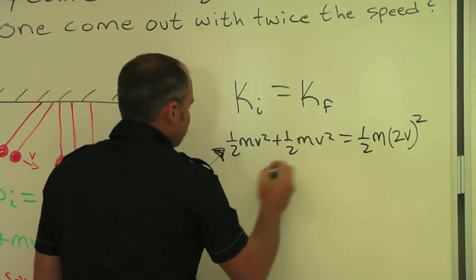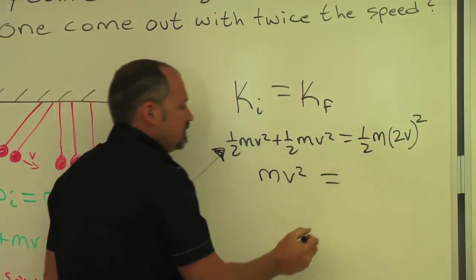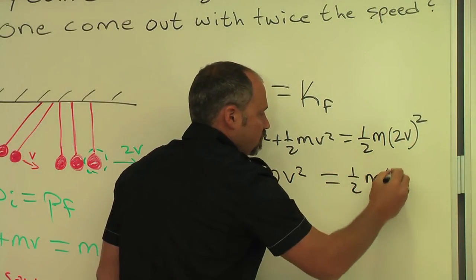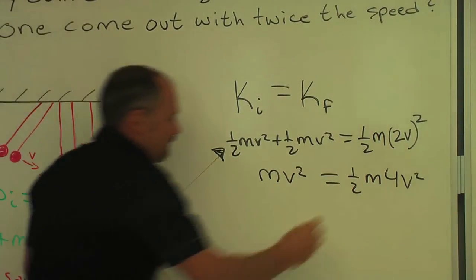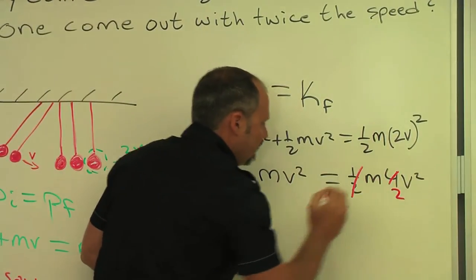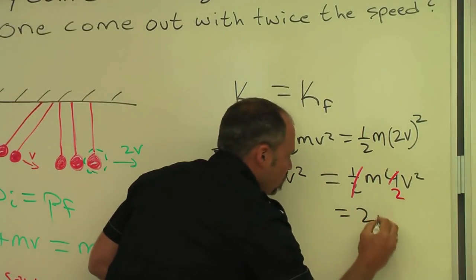And this side, one-half plus one-half is just one, and then this side, we have a one-half m, two squared is four, v squared, and we can see that this becomes a two, and that goes away, so we have two mv squared.